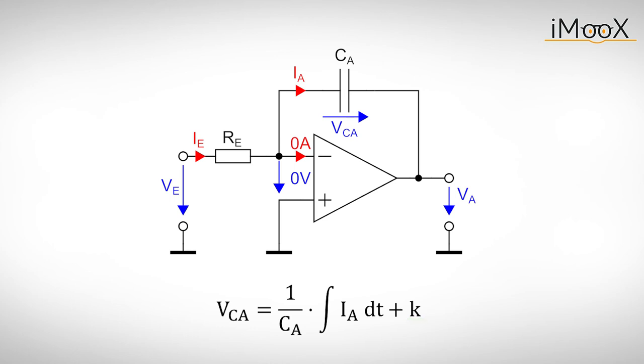If we just powered our circuit, the capacitor isn't charged and K is zero volts. We substitute the current IA with IE, which in turn is VE divided by RE. The output voltage is again minus VCA and can be written as minus 1 divided by RE times CA multiplied by the integral of VE over DT.